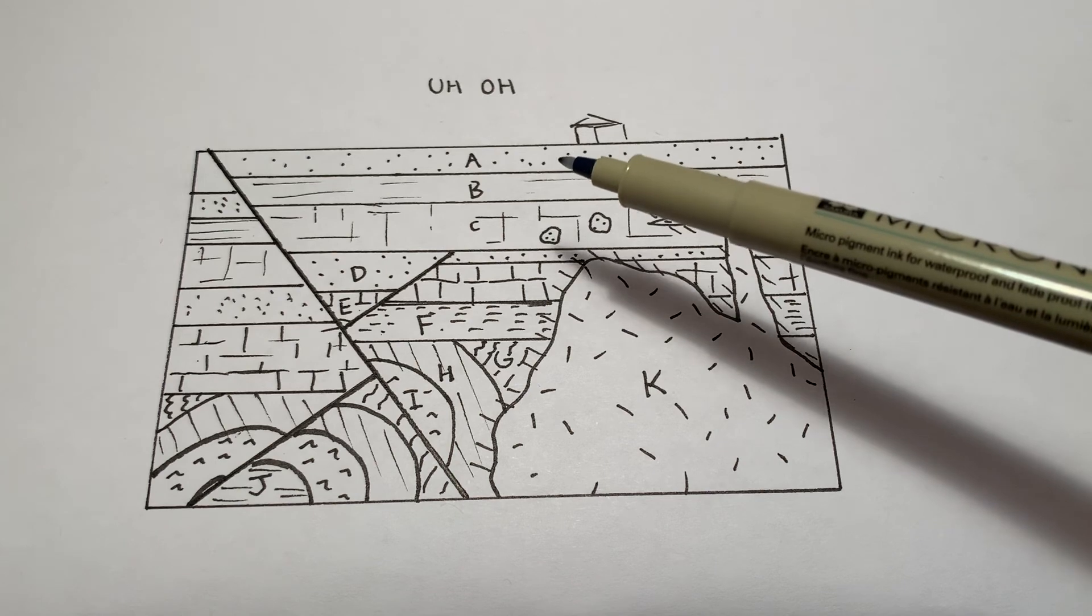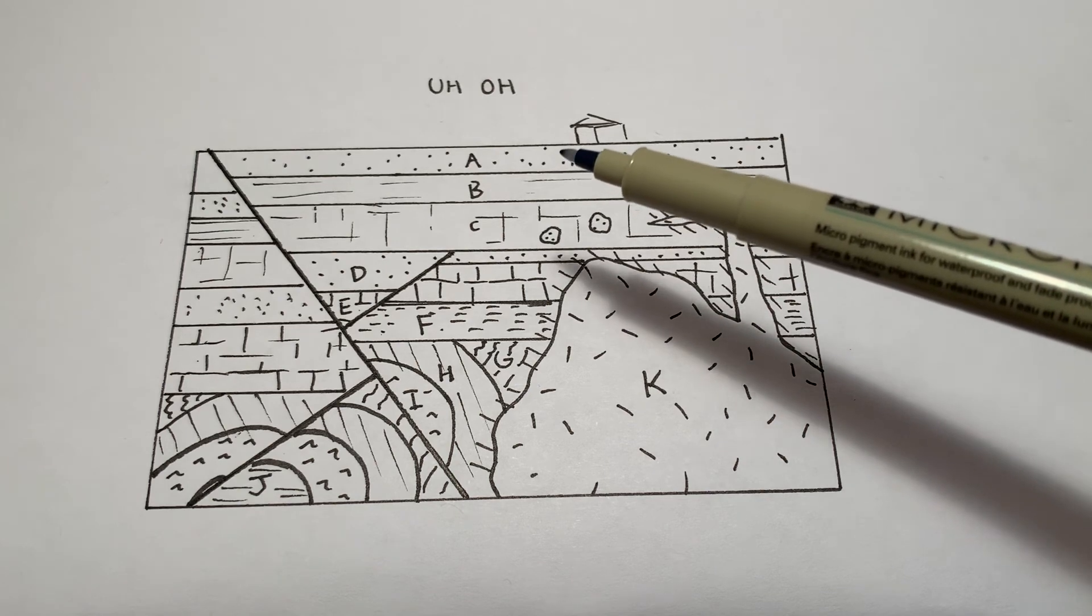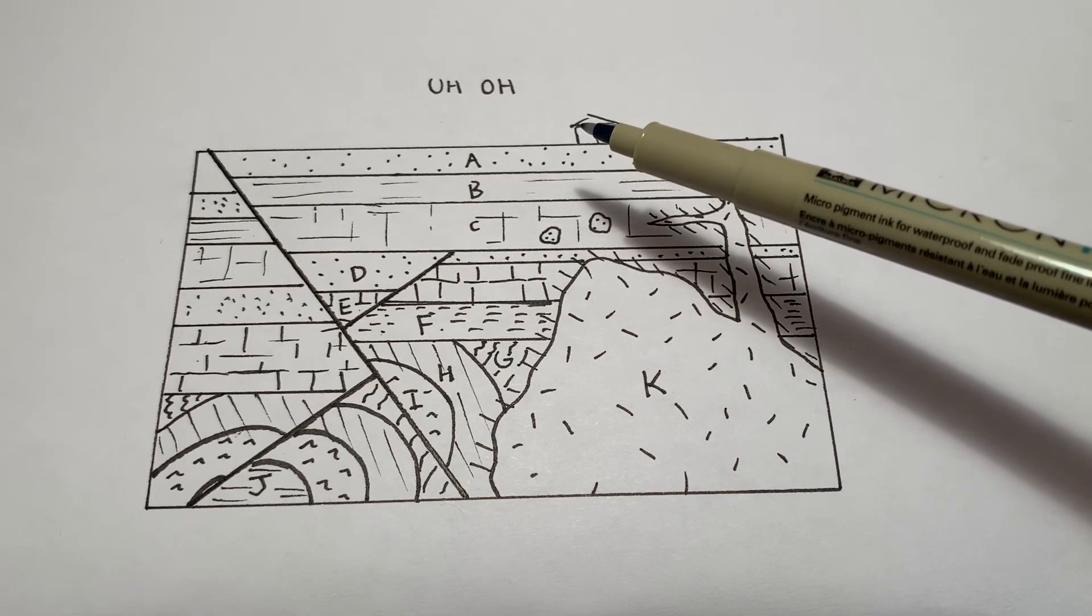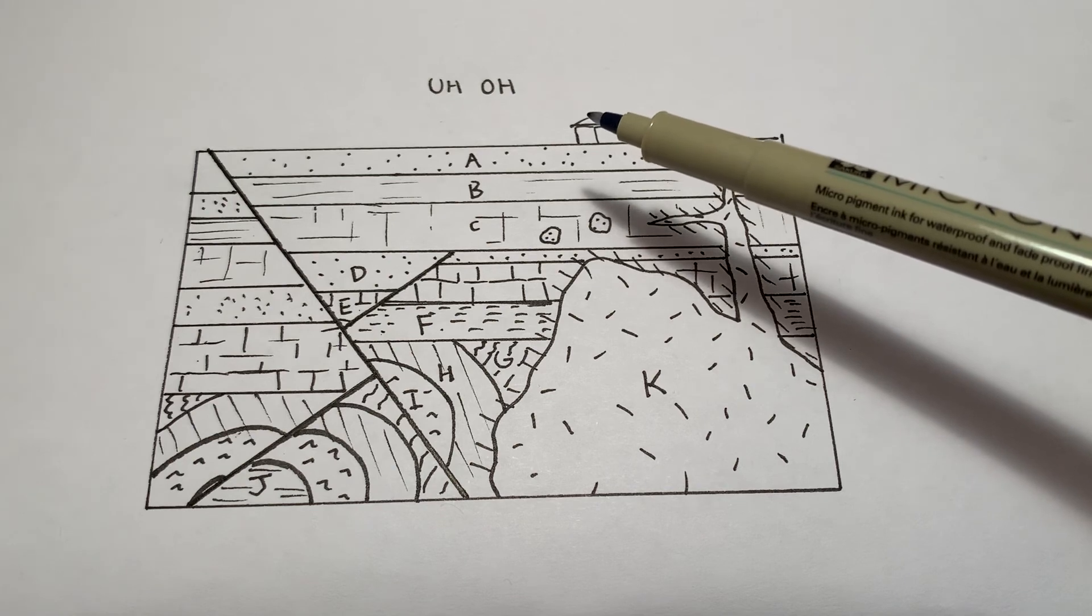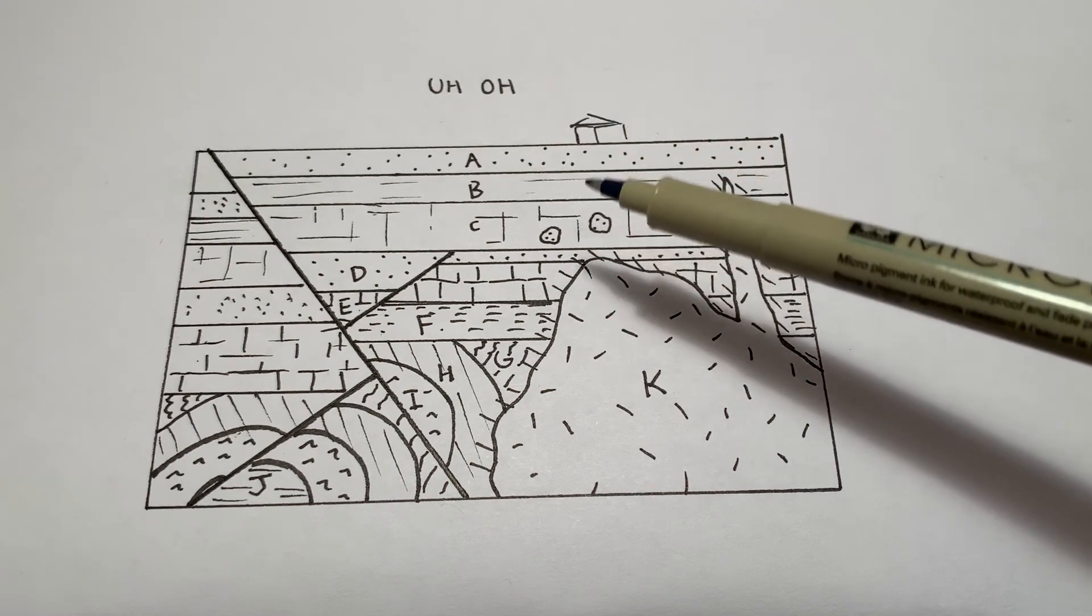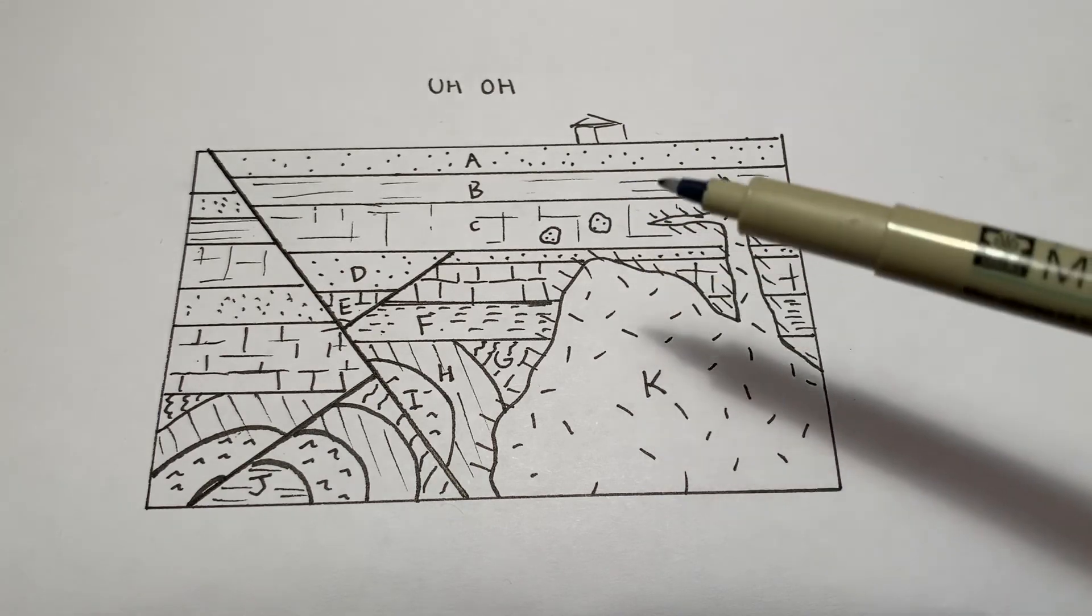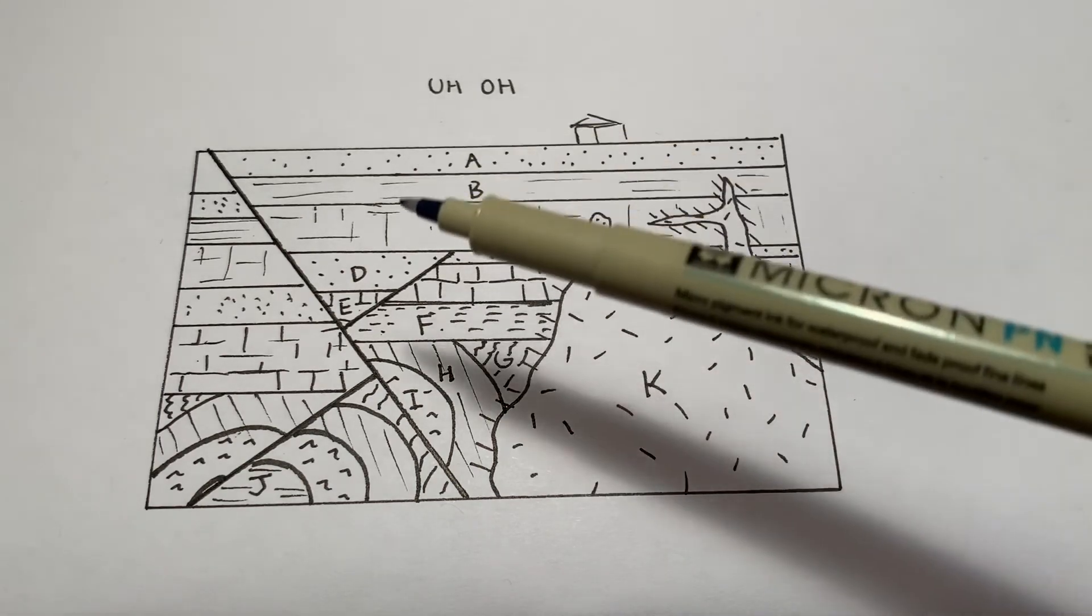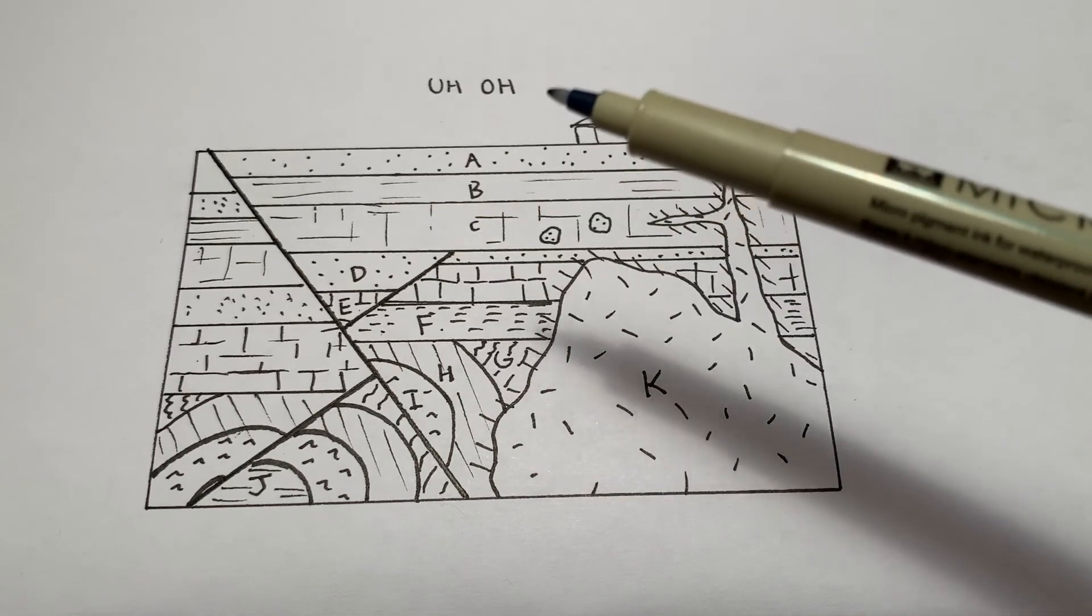And so really, the key to a lot of relative dating is breaking it down into steps. We'd start this problem by looking at things like, what can we identify with the principle of superposition? What relative ideas of these ages can we get with our simplest tool? And then we'll start working into the other ones. Of course, get into what's this igneous intrusion doing? What are the faults doing? And make further judgments from there.